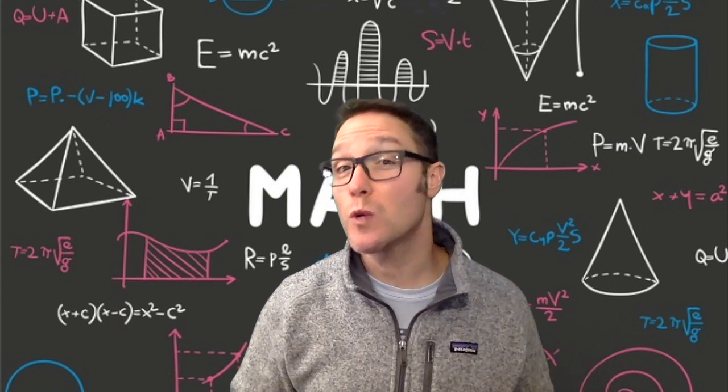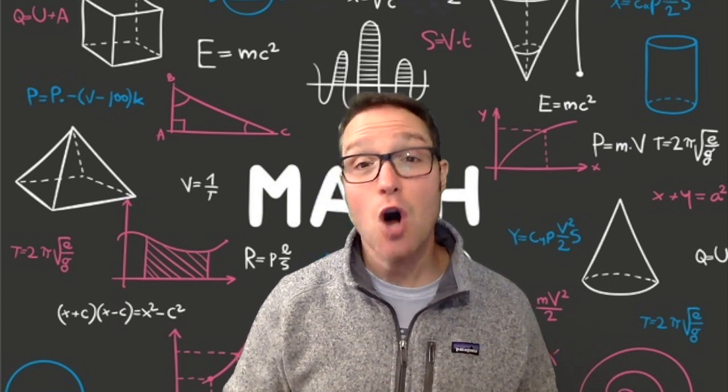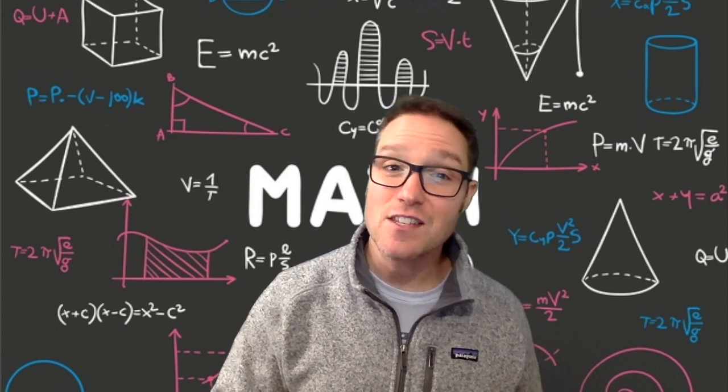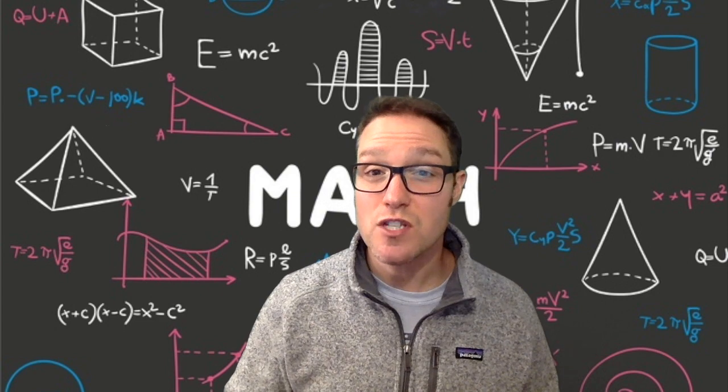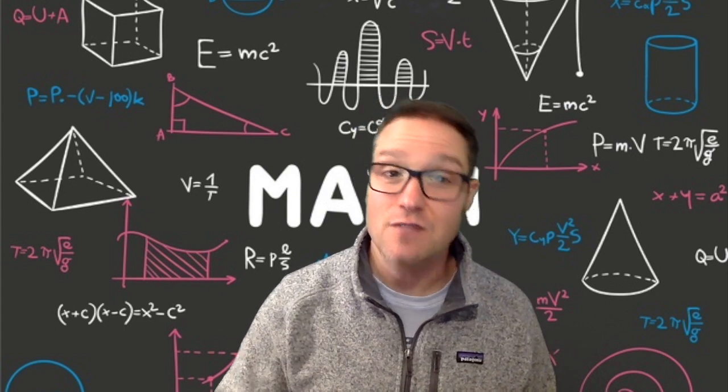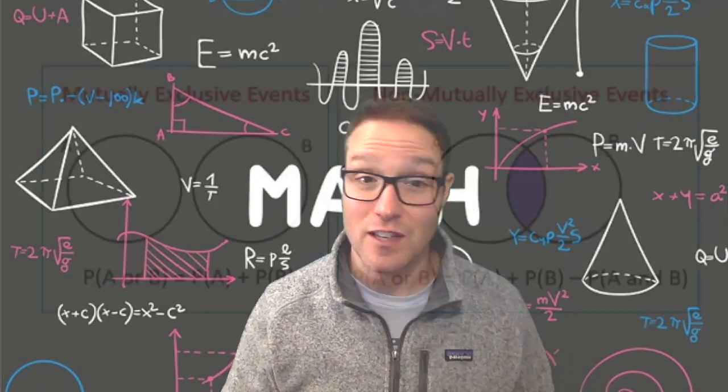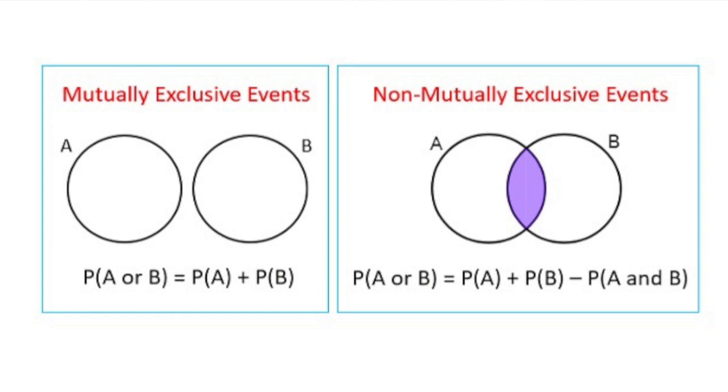Two events are mutually exclusive if they have no outcomes in common. For example, positive numbers and negative numbers are mutually exclusive since there is no single number that is both positive and negative simultaneously. This diagram shows what mutually exclusive events look like. Mutually exclusive events have no overlap. Non-mutually exclusive events, you can call this inclusive events, do have some outcomes in common, so there is overlap in their sets. Now take a look at the formulas beneath each diagram.